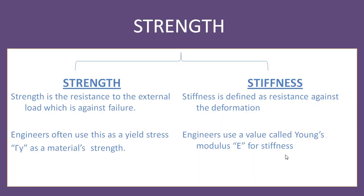So what is strength? Strength is the resistance to external load, which is resistance against failure. Whatever external load is applied to any body or material, the property that resists that load is called strength. Next, stiffness: stiffness is defined as resistance against deformation. The elongation that happens - that change in size - is called deformation, and the property that resists deformation is called stiffness.